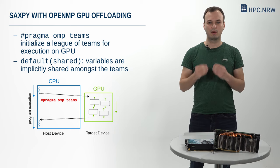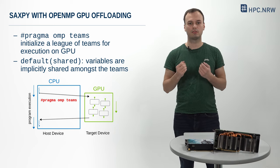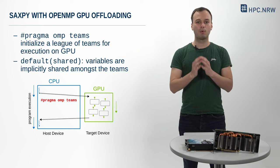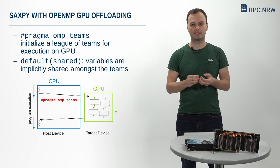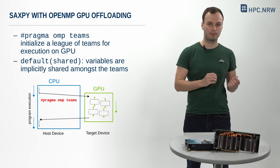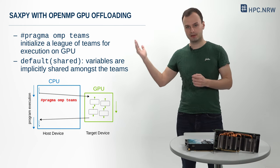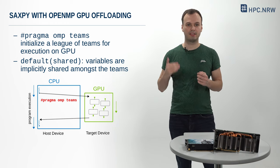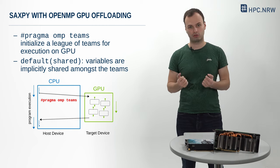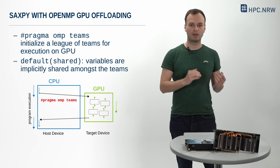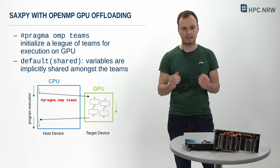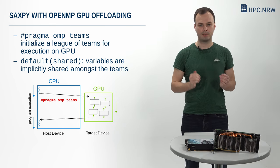The second line of the OpenMP directives contains two important specifications. The pragma OMP teams construct initializes a league of teams to execute the SAXPY on the GPU. As you can see, when this OpenMP directive is encountered, many teams of GPU threads are launched. The default shared clause specifies the data sharing attributes with the involved variables to be implicitly shared among all teams on the GPU.